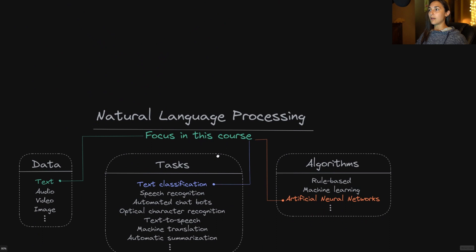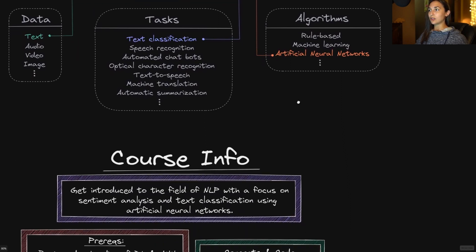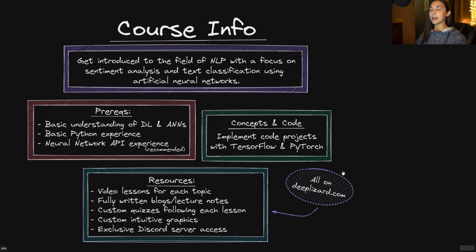Within the field of NLP, there are various algorithms used to solve various tasks that are made up of different data types. For the focus of this course, the type of data we'll be working with will be text data, and as our algorithms, we'll be making use of artificial neural networks to solve the task of text classification and sentiment analysis. Given all the different tasks, algorithms, and data types within NLP, the way we work with and process data will vary greatly. Here we can see exactly where our focus in this course resides within all of these various data types, tasks, and algorithms.